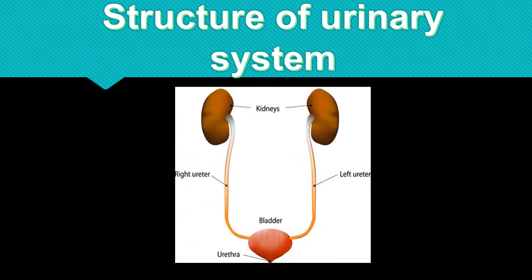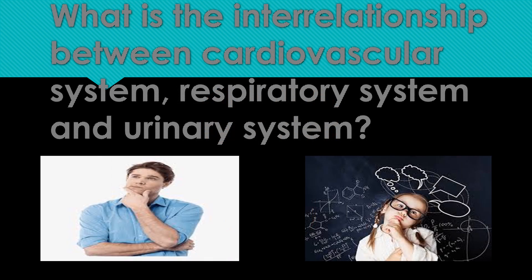Next, the structure of the urinary system. The urinary system is made up of two kidneys, two ureters, one urinary bladder, and one urethra. We will also look at the interrelationship between the cardiovascular system, respiratory system, and urinary system.